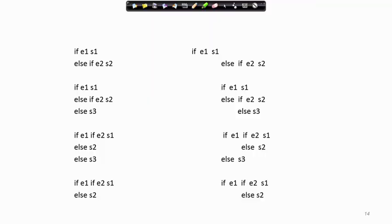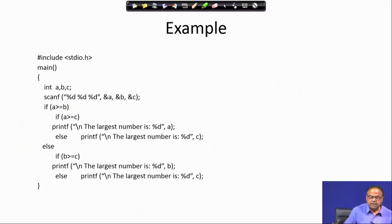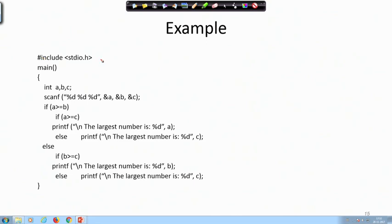Welcome. In the last lecture we had looked at the nested if-else structure, today we will continue with that discussion. Here is an example that uses the nested if-else structure. In programming fundamentals in C, we start with an include stdio.h and then we have the main function. Inside the main function we declare three variables a, b, and c, and probably you might have guessed that we are again trying to find out the maximum of the three integers a, b, and c.